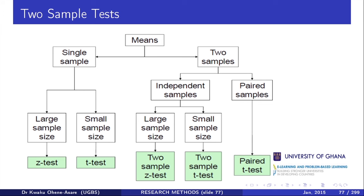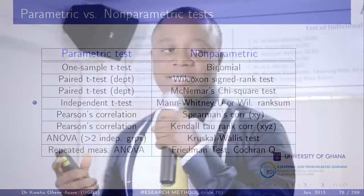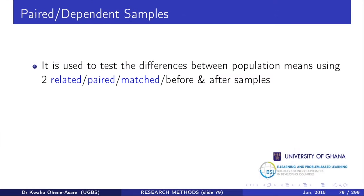Our focus is going to be on the paired t-test, which is the dependent sample. Its non-parametric version is the Wilcoxon signed-rank test, but we won't cover that now. The paired t-test is used to test for differences between population means using two related, paired, matched, or before-and-after samples, where the subjects repeat themselves.